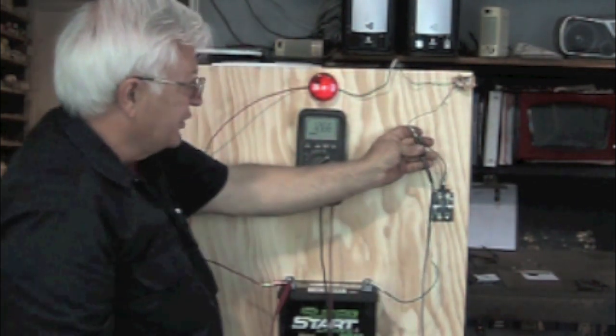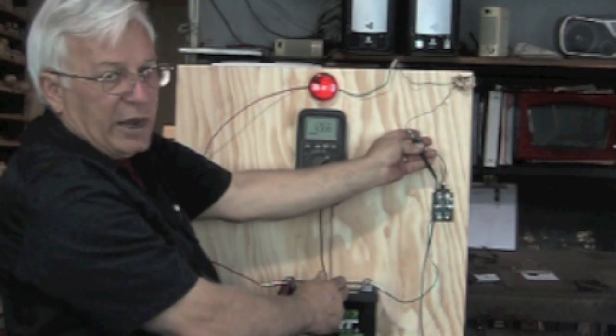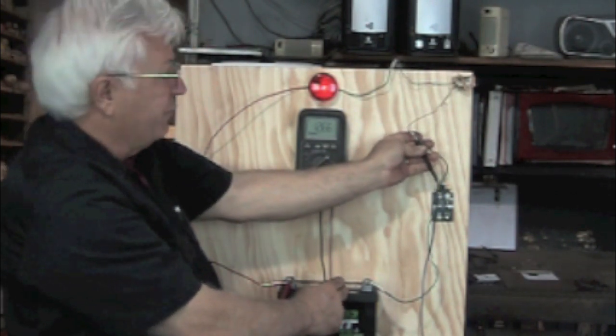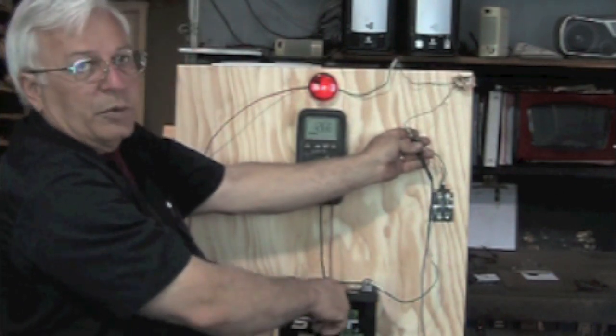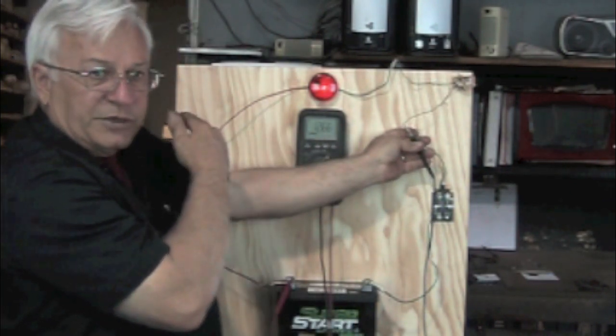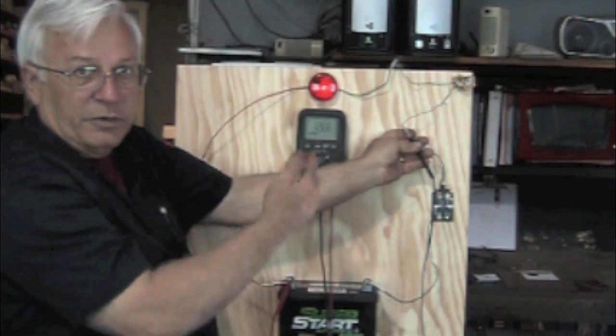Now we're reading 12.6 because remember we're testing the ground side looking for positive. I found positive. The other way we were reading 0 volts because we were testing from the positive side looking for ground.